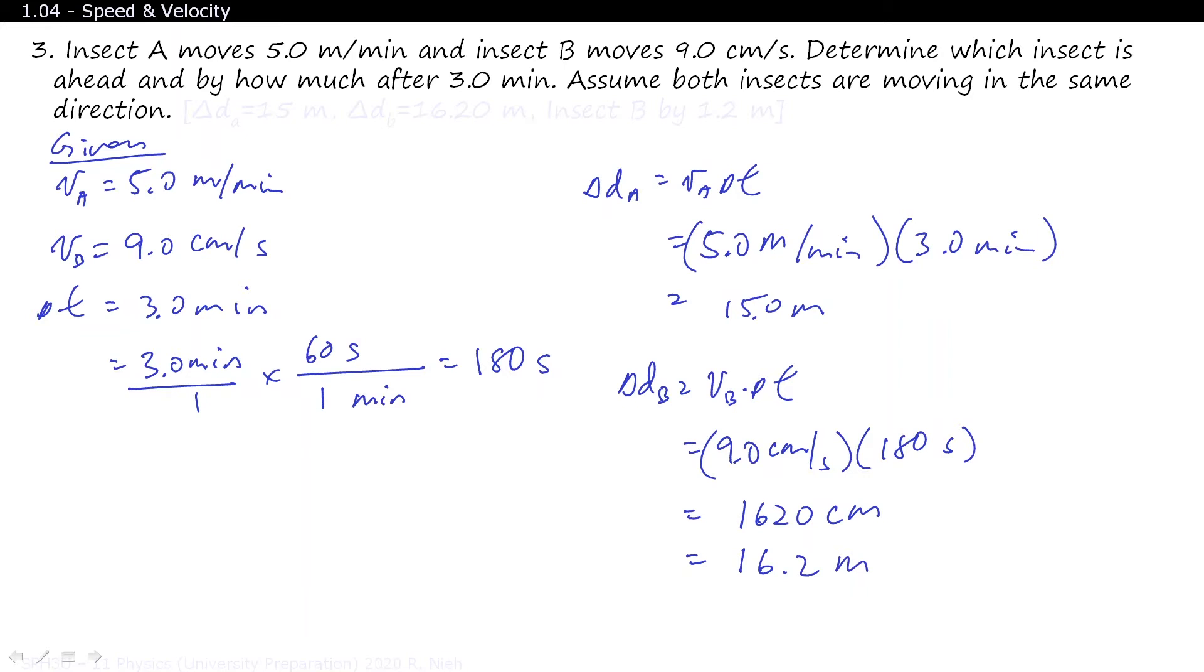So, if we try to look for, and I'm sorry I ran out of space, if we look for the difference between these two values, that equals delta DB minus delta DA, which equals 16.2 meters minus 15.0 meters, and that leaves us with 1.2 meters. Therefore, insect B leads by 1.2 meters.